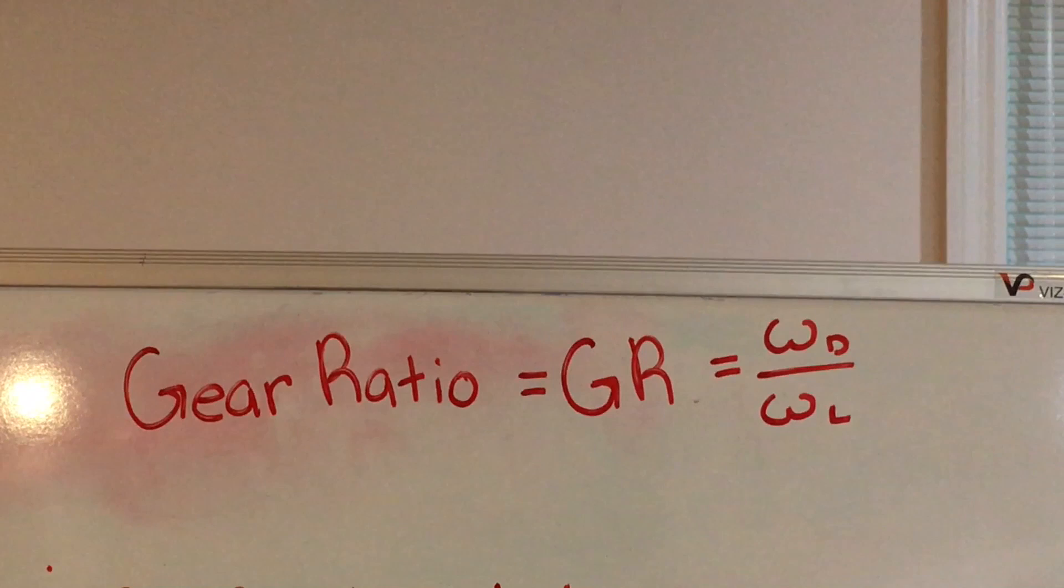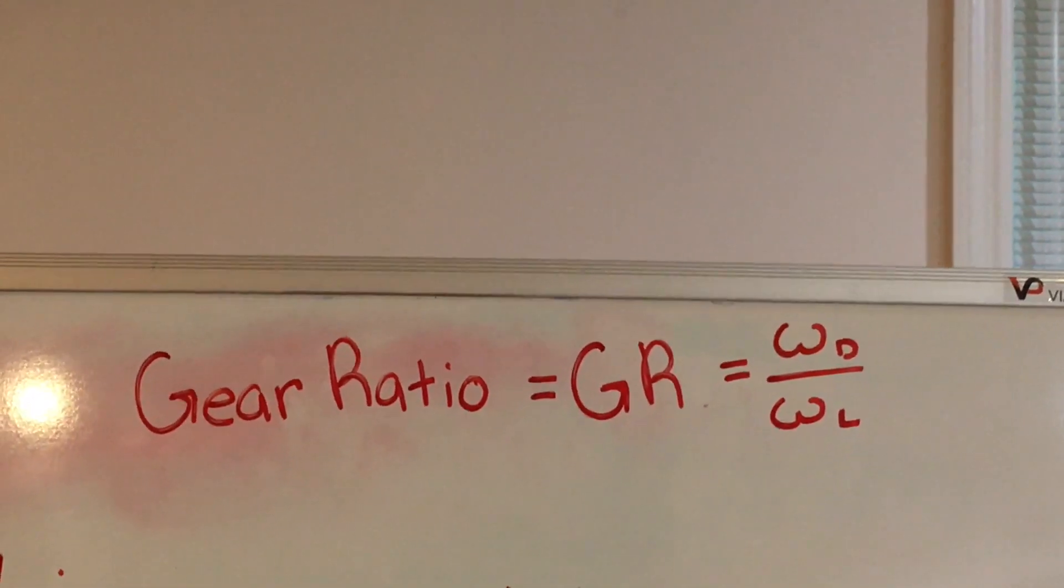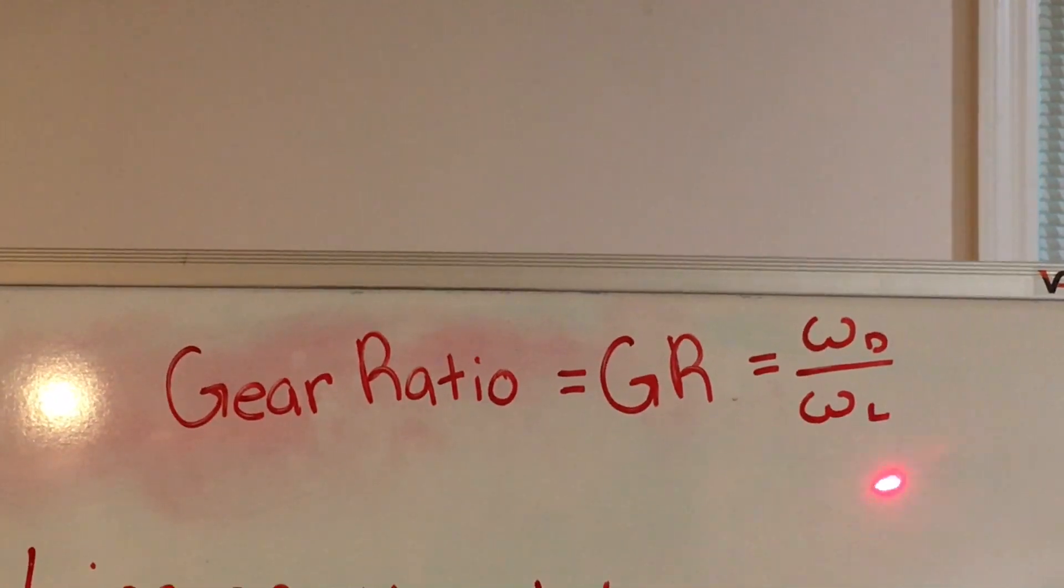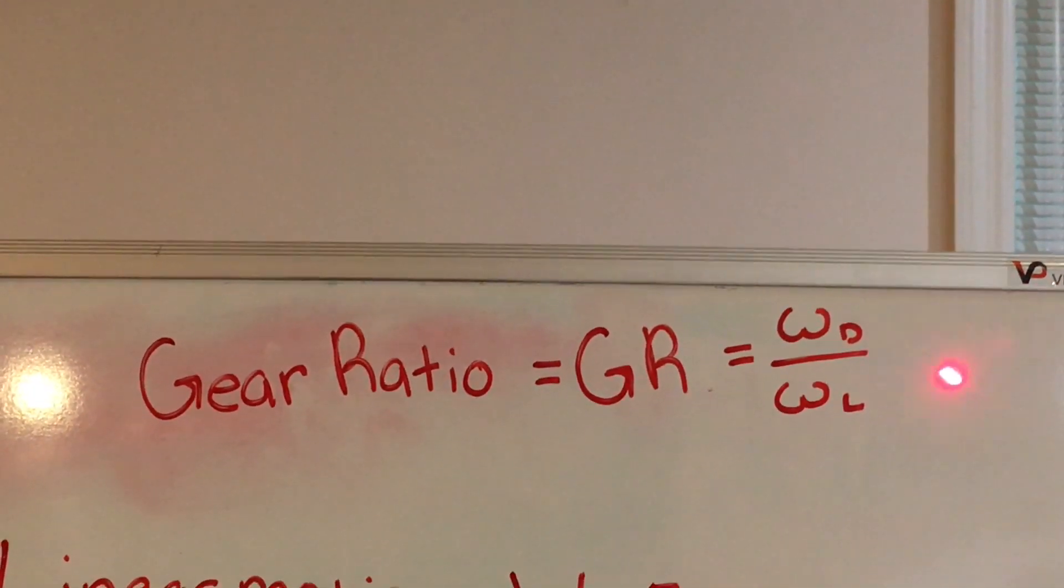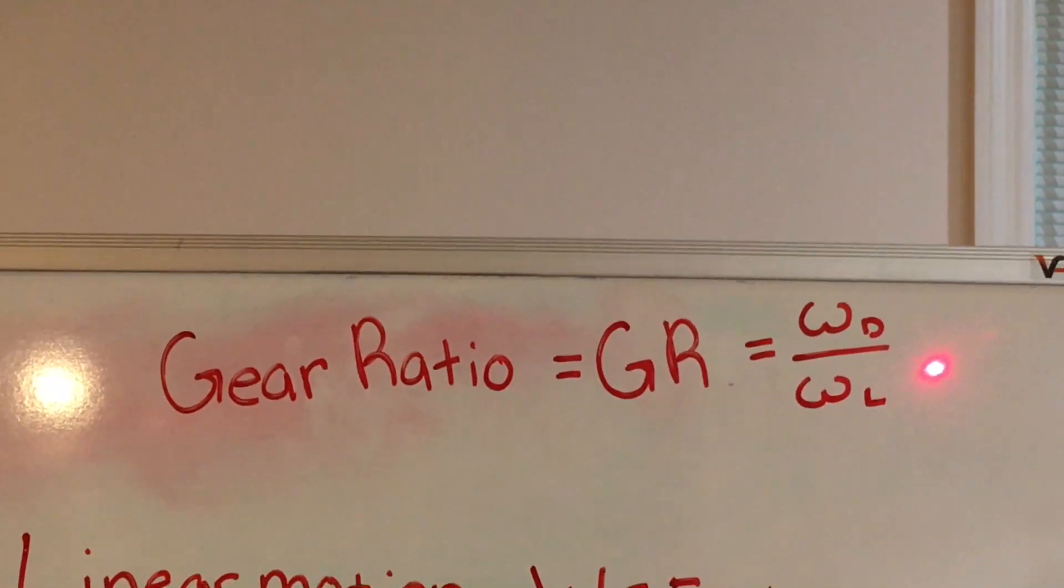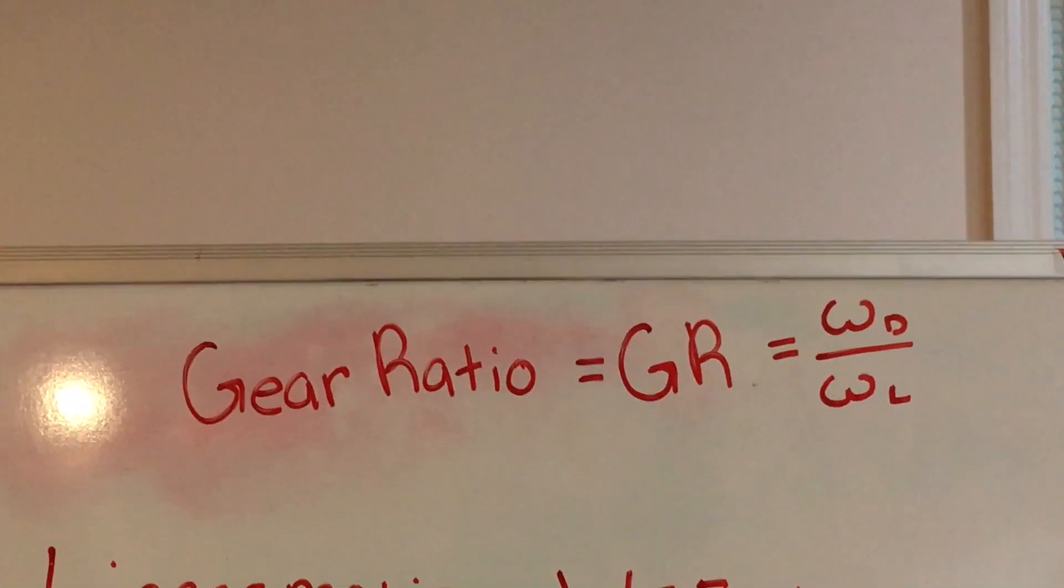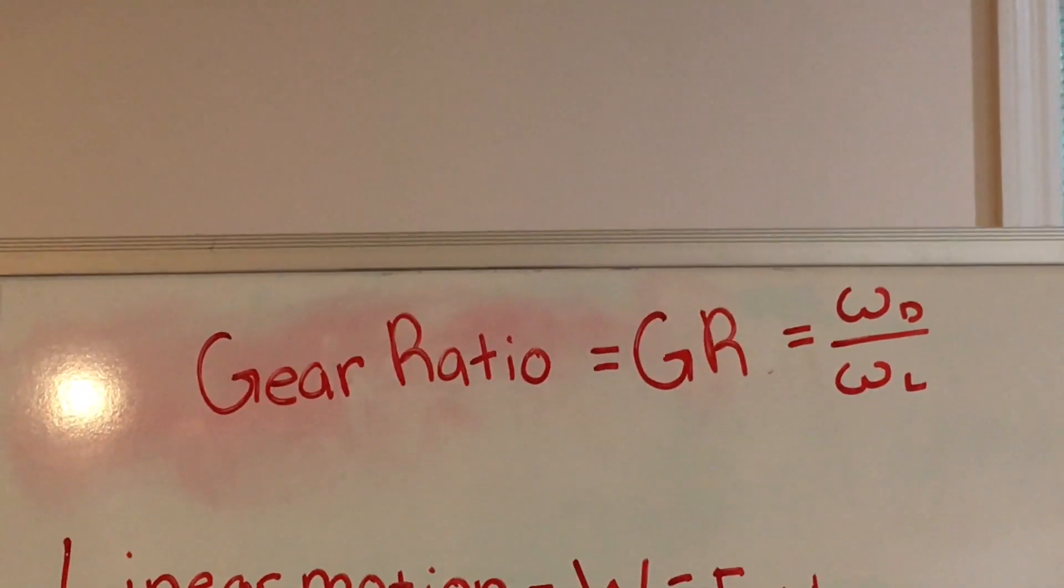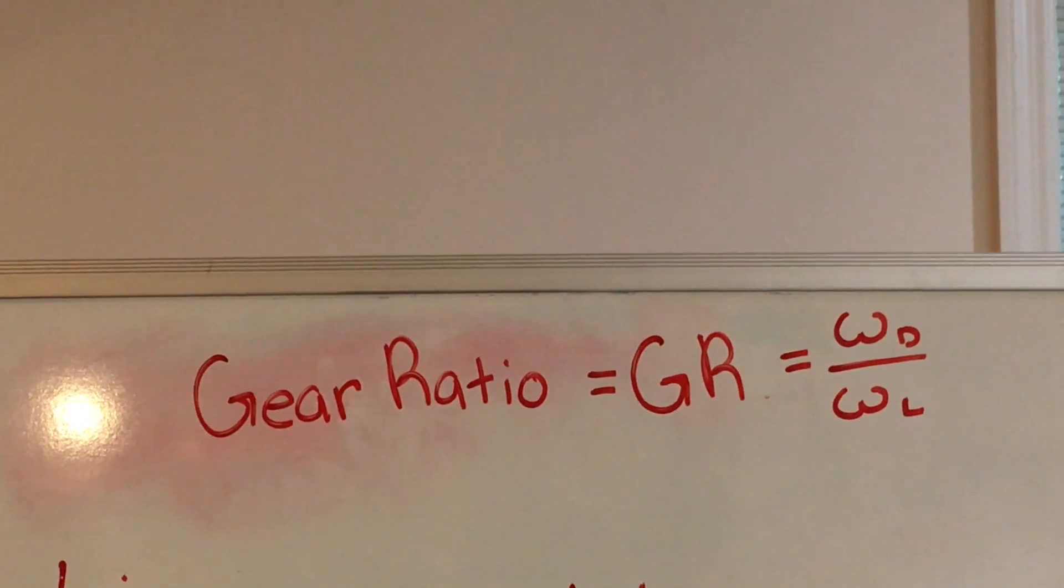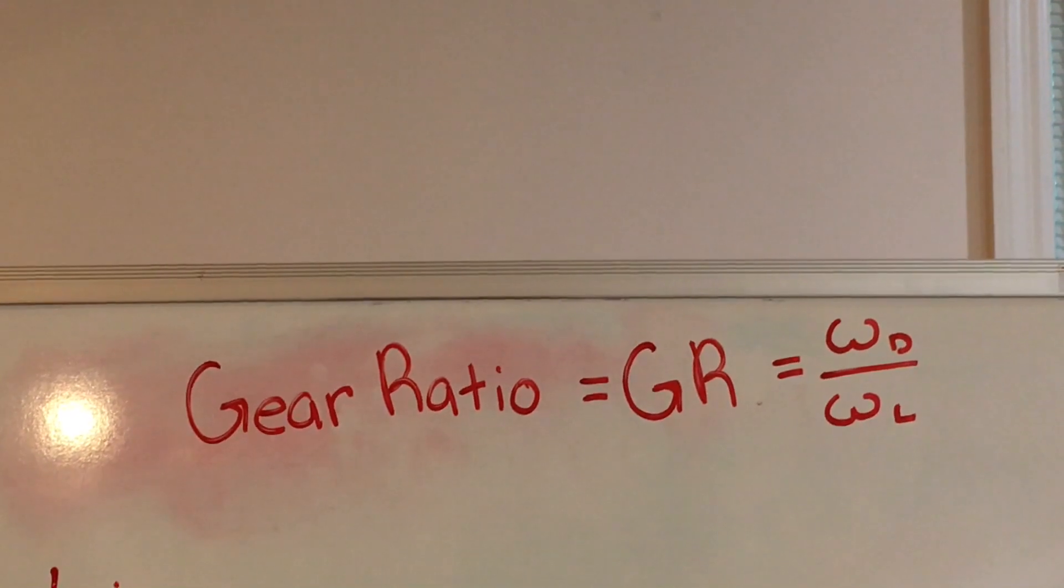I will be explaining the relationship between gear ratios and torque. The gear ratio is the ratio of the angular velocity of the drive axle, or gear, to the angular velocity of the load gear, or axle. And angular velocity is written as the Greek symbol omega. The gear ratio is used to control the speed of the torque of the load axle. Torque is the twisting force and is related to the capacity of the load axle to move objects.